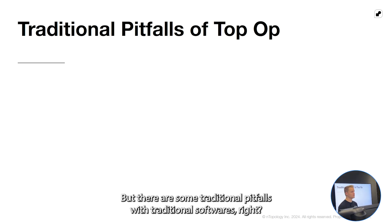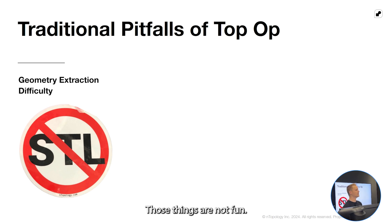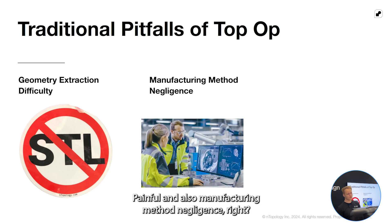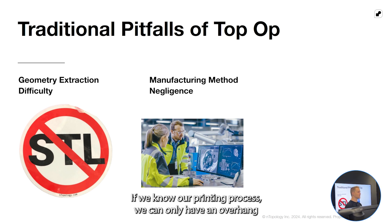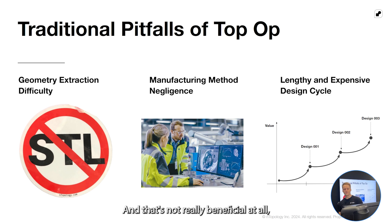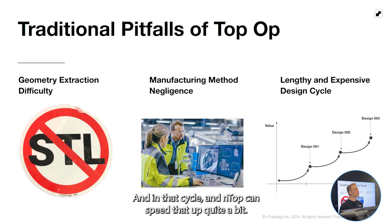There are some traditional pitfalls with traditional softwares. Geometry extraction — STLs. Nobody likes those things, they're not fun. Taking your result and turning it into something smooth and usable is traditionally really difficult and painful. Also manufacturing method negligence: if we know our printing process can only have an overhang of 40 degrees and we don't take that into account, we can get some really unprintable structures. And lengthy and expensive design cycles — doing it in some other softwares can take significant time and effort, but nTop can speed that up quite a bit.